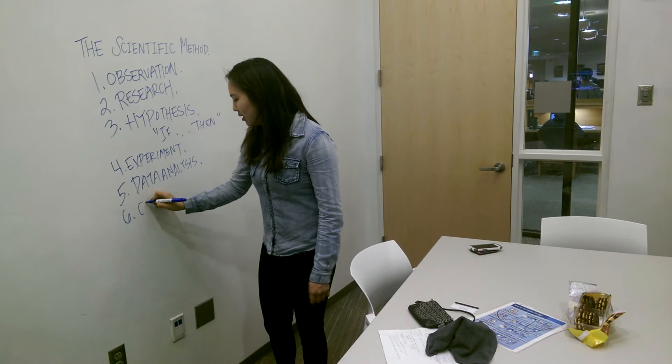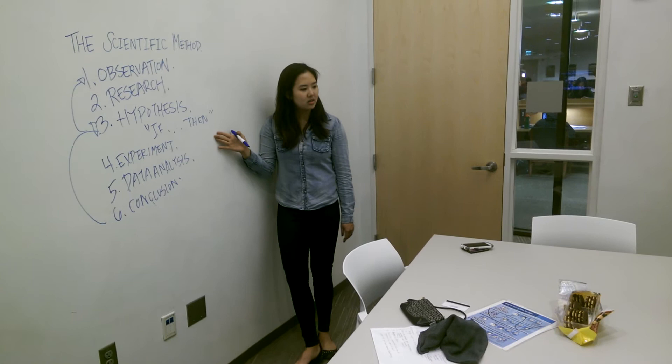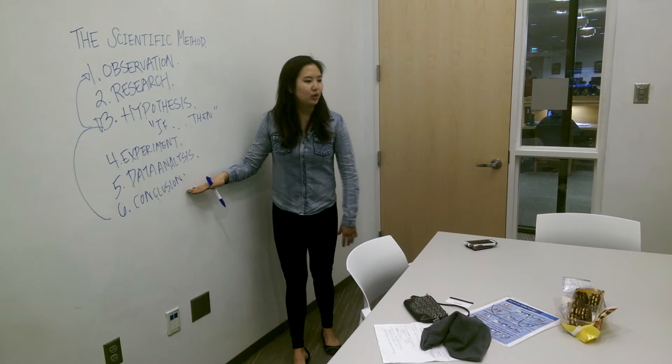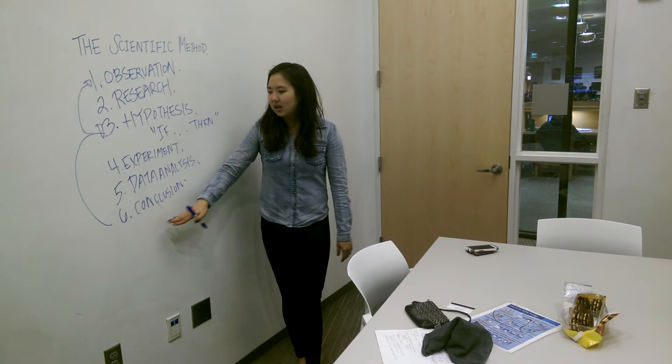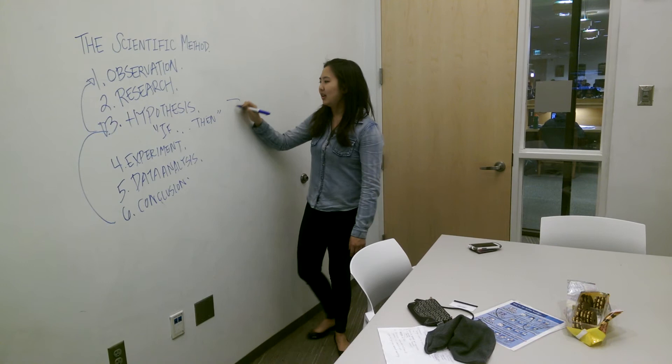And then the last one would be conclusion. This ties back to answering whatever question you asked — the hypothesis. Was your hypothesis correct? Was it incorrect? Also, a good thing to note is that if you think you made errors, say you were holding onto the Coke can for really long and maybe your hand warmed it up, you'd want to include that here so that any errors are taken into account. At the end, you would have an answer — whether your hypothesis was correct or not — and the solution to your overall problem.